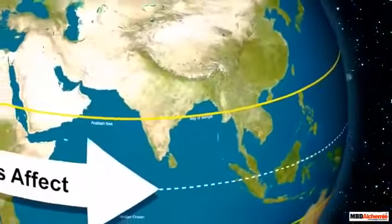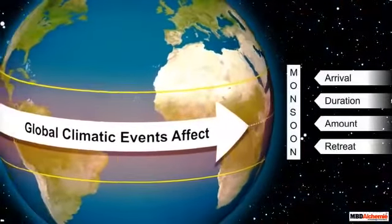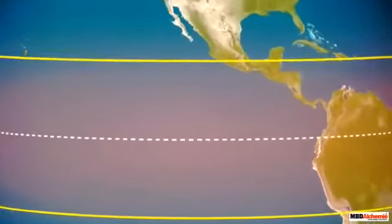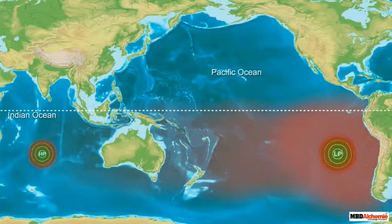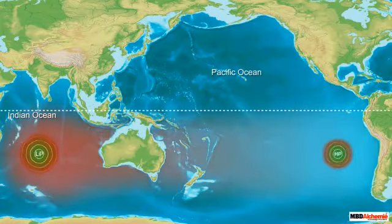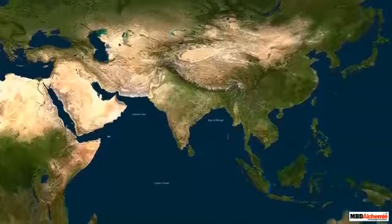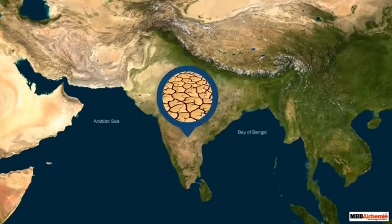Global climatic events involving changing pressure systems over oceans have a tremendous effect on the arrival, duration, amount, and retreat of monsoon in India. The equatorial belt or tropical region of the Pacific and Indian Oceans faces the maximum effects. Usually, the southeastern Pacific has low pressure and high temperature while the eastern Indian Ocean has high pressure and low temperature. But this situation reverses roughly every 3 to 8 years. This reversal of temperature and pressure conditions across the ocean is called the Southern Oscillation. The normal condition brings moderate to good monsoon, whereas the reverse condition brings drought and famine to the Asian region.